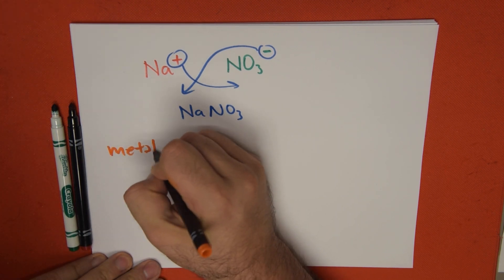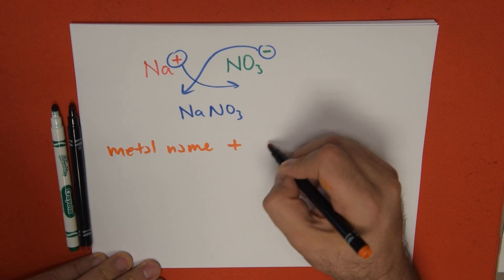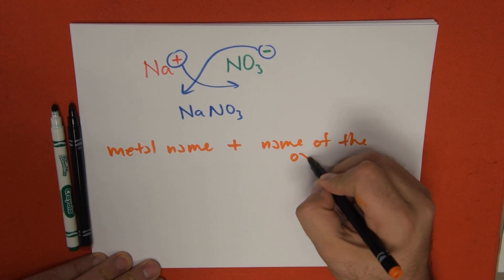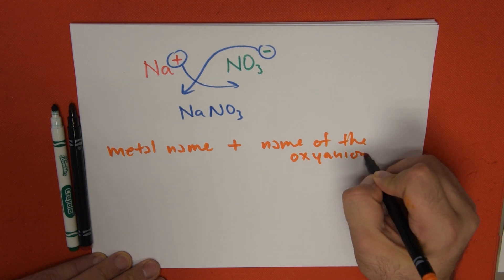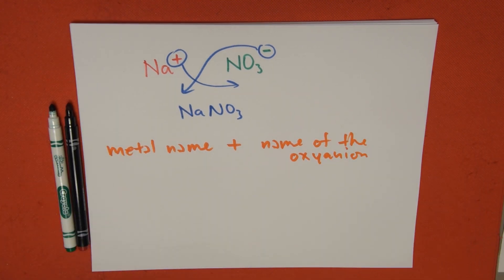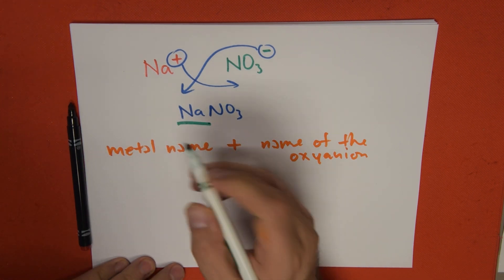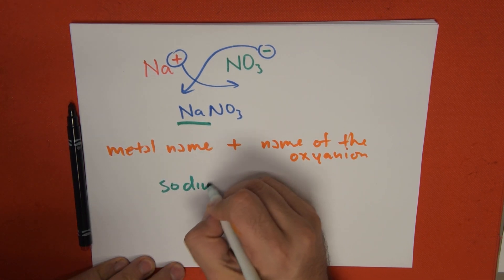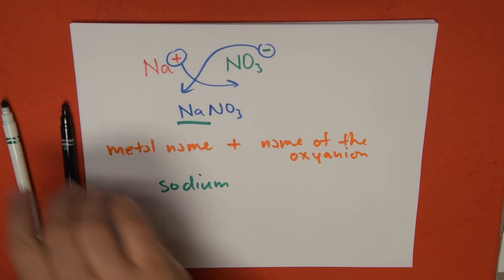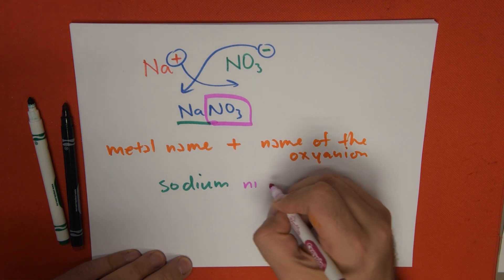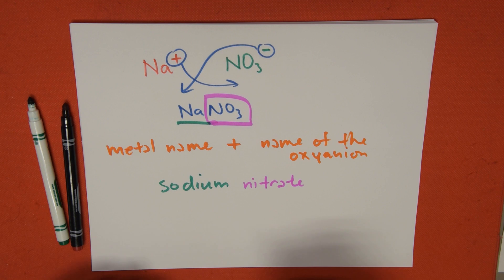What is the naming style for oxysalts? Metal name plus the name of the oxyanion. This is for a metal that has only one valence. What's going to be my final name? My final name is going to be sodium. And if I look on my chart, the name of this whole thing is nitrate. Sodium nitrate.